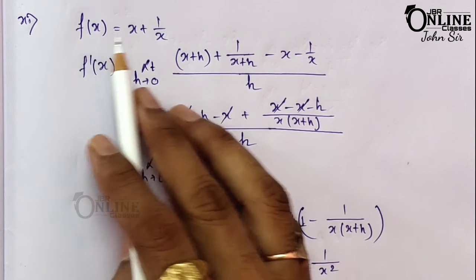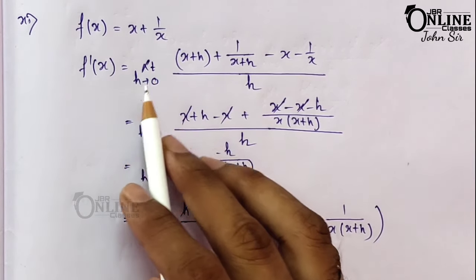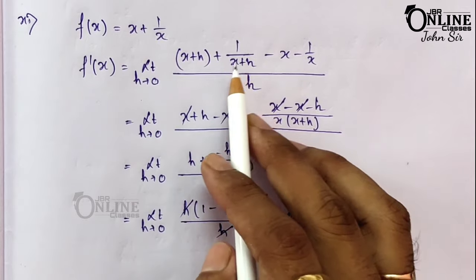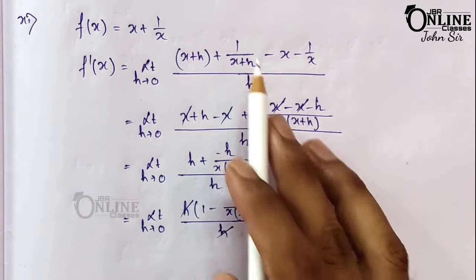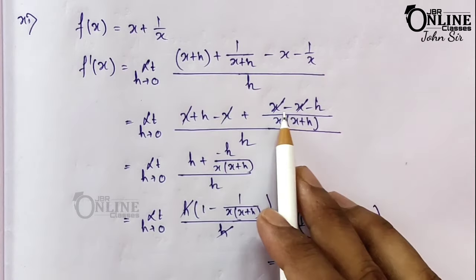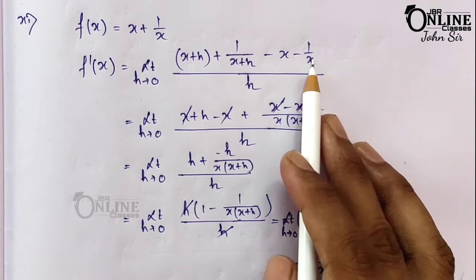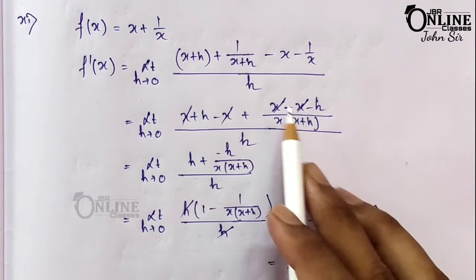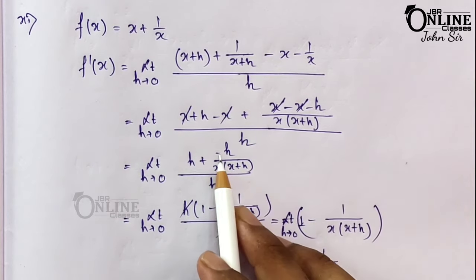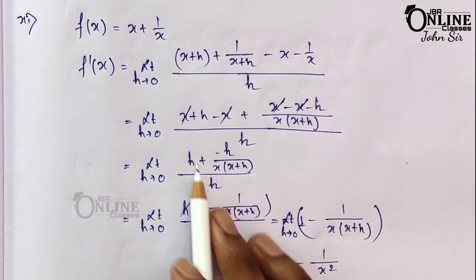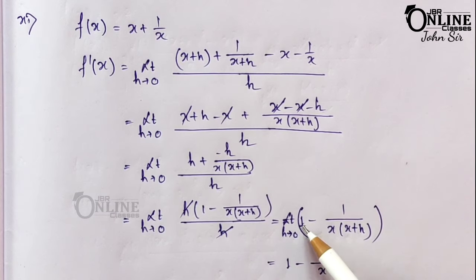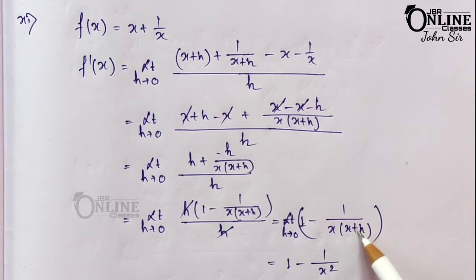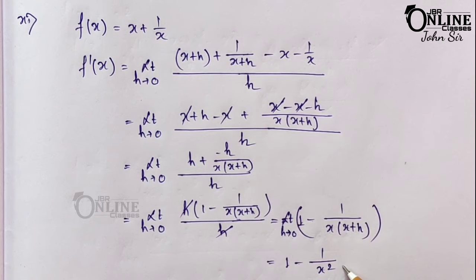Sum number 11: f(x) = x + 1/x. So f'(x) = limit h→0 of [(x+h + 1/(x+h)) - (x + 1/x)] / h. This separates as: (x+h - x)/h + [1/(x+h) - 1/x]/h = 1 + (-h)/[x(x+h)·h] = 1 - 1/[x(x+h)]. Substituting h→0: f'(x) = 1 - 1/x².